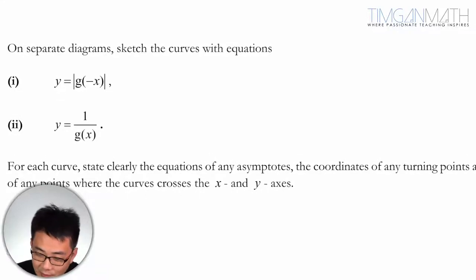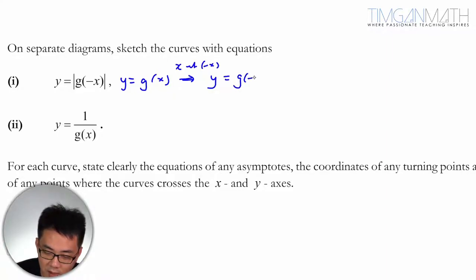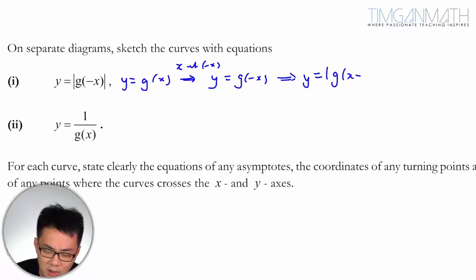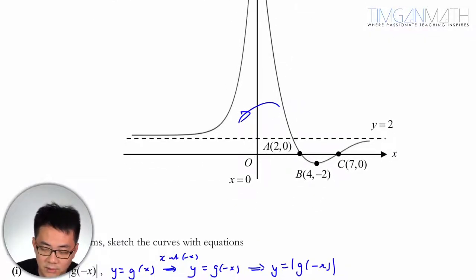What we need to recognize is that this involves g(x) being transformed. We need to replace x with negative x, giving us g(-x), which means a reflection about the y-axis. After that, we apply the modulus, so we just take the absolute value and flip it up.